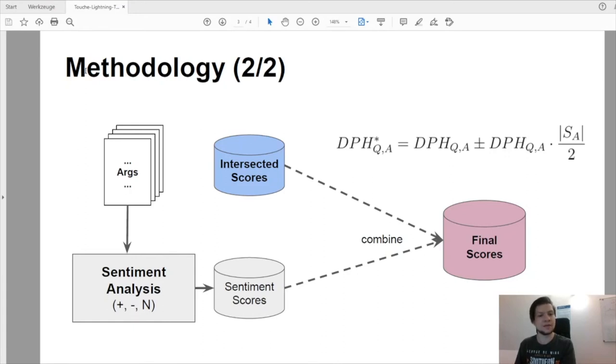We combine our intersected scores and sentiment scores to achieve the final scores. These are calculated by the formula that can be seen on the slide. This formula favors either neutral arguments during subtraction or emotional arguments during addition. We utilize both approaches. This can be seen on the final slide.